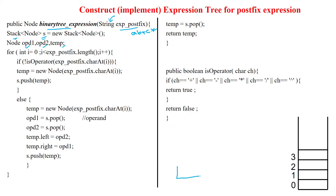Each node will have three fields: one is left child field, data field, and right child field. So three fields will be available for each node. Now we are starting reading the expression from the 0th character, 0th position. The length of the string is 5.